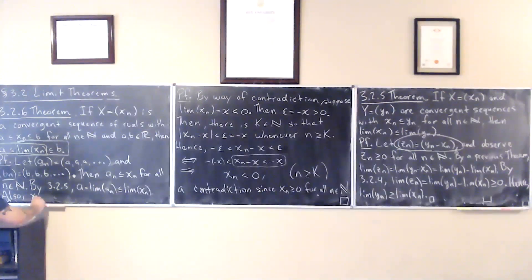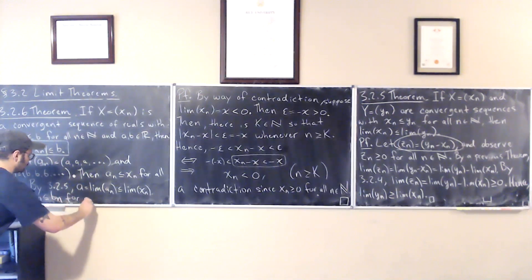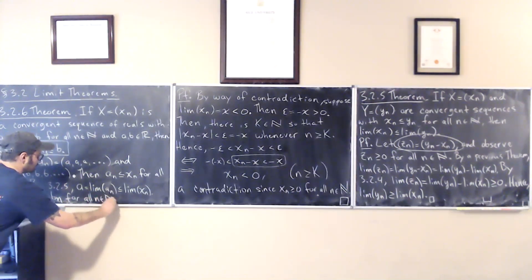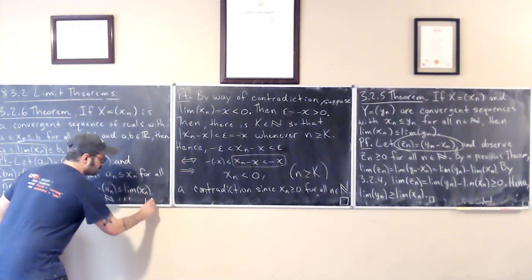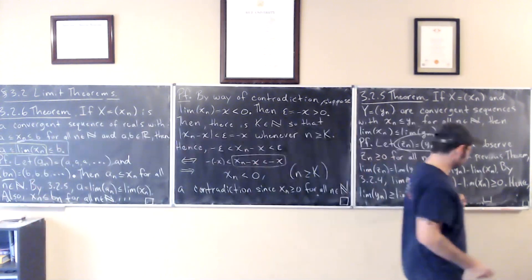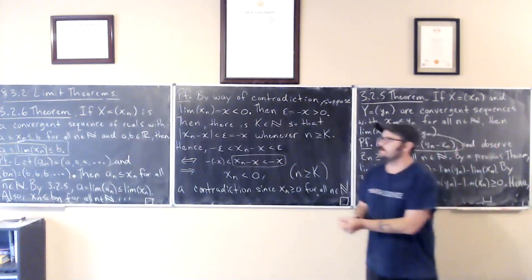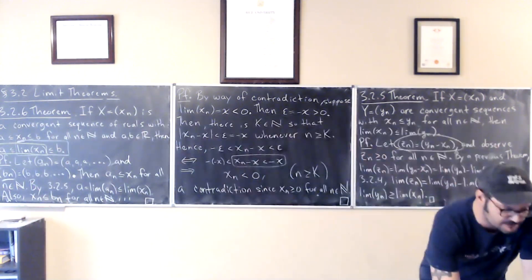Because x_n is at most b_n for all n. Which, by 3.2.5, you get the limit of x_n is at most the limit of b_n, which is equal to b. It's just a constant. So I'm leaving it to you to fill in those holes. I'm going to go ahead and stop the recording so I can partition my videos into smaller pieces.